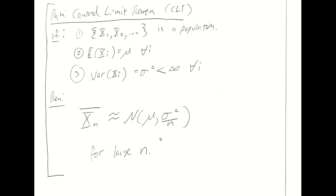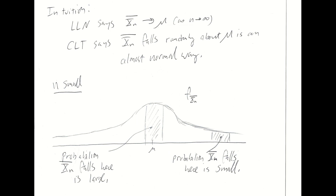Almost any kind of random variable will work as long as it satisfies the one condition of finite variance. This is a random variable, and the likelihoods of it showing up in different places are given approximately by a density function for a normal with mean mu and variance sigma squared over n. Intuitively, the law of large numbers tells us that the sample mean converges to the population mean as n goes to infinity. The central limit theorem tells us that the sample mean will fall randomly around mu in an approximately normal way.